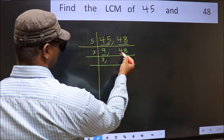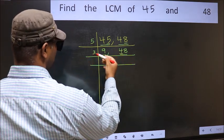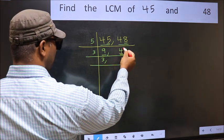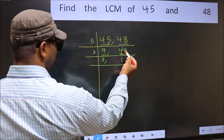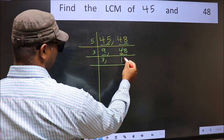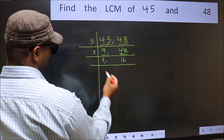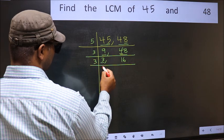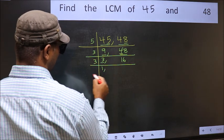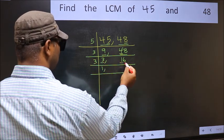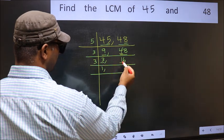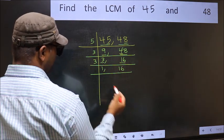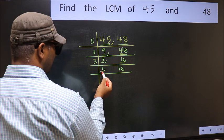The first number is 4. A number close to 4 in the 3 table is 3 once 3. 4 minus 3 is 1, carried forward — 18. When do we get 18 in the 3 table? 3, 6, 18 — so 3 sixes are 18. Now here we have 3, which is a prime number, so 3 once 3. The other number 16 is not divisible by 3, so write it down as it is. Now we got 1 here.